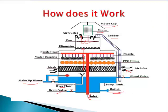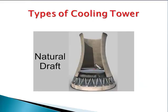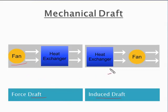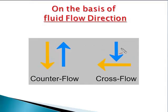Now we come to the types of cooling towers. The first type is the natural draft cooling tower, which does not use any mechanical device for cooling. The second type is the artificial or mechanical draft cooling tower, which is classified into two types: forced draft and induced draft. When the fan is placed before the heat exchanger, it is known as a forced draft cooling tower. When the mechanical fan is placed after the heat exchanger, that type is known as an induced draft cooling tower.